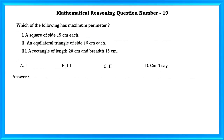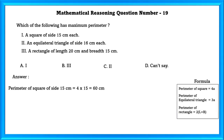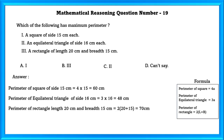Mathematical reasoning question number 19: Which of the following has maximum perimeter? First, a square of side 15 cm each — perimeter is 60 cm. Second, an equilateral triangle of side 16 cm each — perimeter is 48 cm. Third, a rectangle of length 20 cm and breadth 15 cm — perimeter is 70 cm.